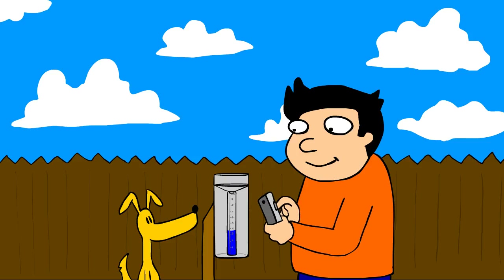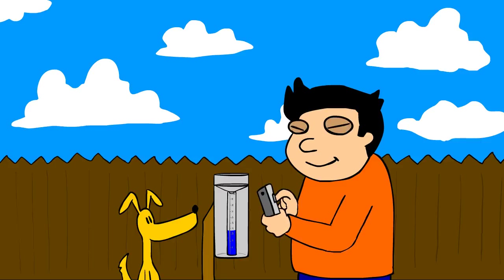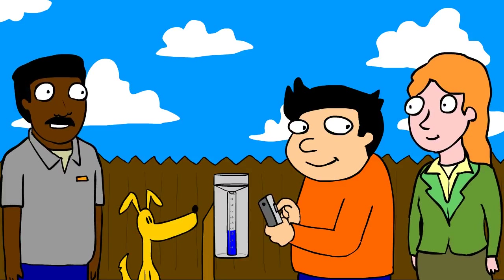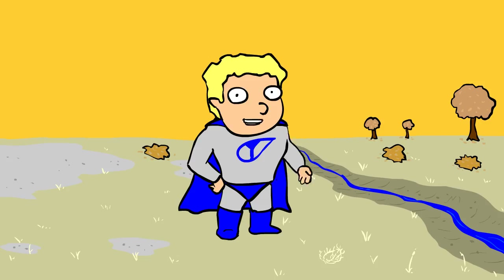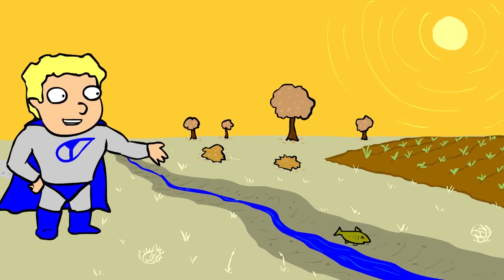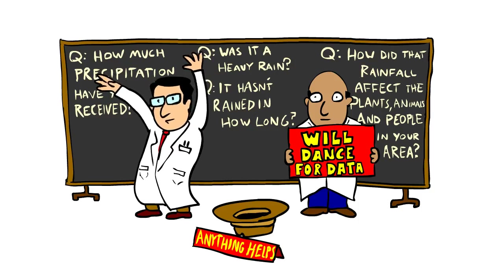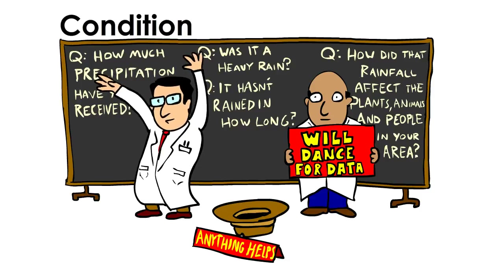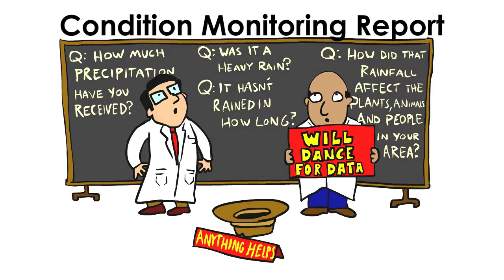As a CoCoRaHS observer, you collect and report daily data that gives scientists and other organizations an idea of how much precipitation has fallen in your area. But what does the amount of precipitation mean for your area? What does it look like? Scientists and managers are interested to know, and you can tell them by submitting a condition monitoring report.